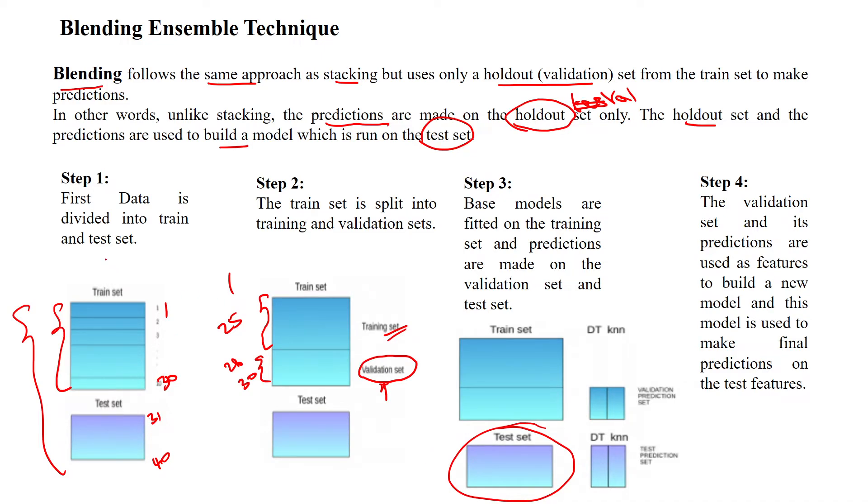Here, the first step is giving you the data set is divided into training samples and testing samples. Then the step two, we are dividing that training samples into validation data set and training data set. So validation data set and training data set.